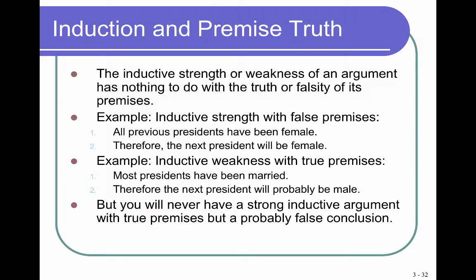Just like validity has nothing to do with the truth of a deductive argument, strength or weakness has nothing to do with the truth of an inductive argument. Here's an example of a strong inductive argument that's false: all previous presidents have been female, therefore the next president will be female. This is a strong argument, but it has false premises. Then we have an example of a weak inductive argument with a true premise: most presidents have been married — that's true — therefore the next president will probably be male. The premise that most presidents have been married isn't good reason to accept that conclusion. So you can have inductive strength with false premises and inductive weakness with true premises.